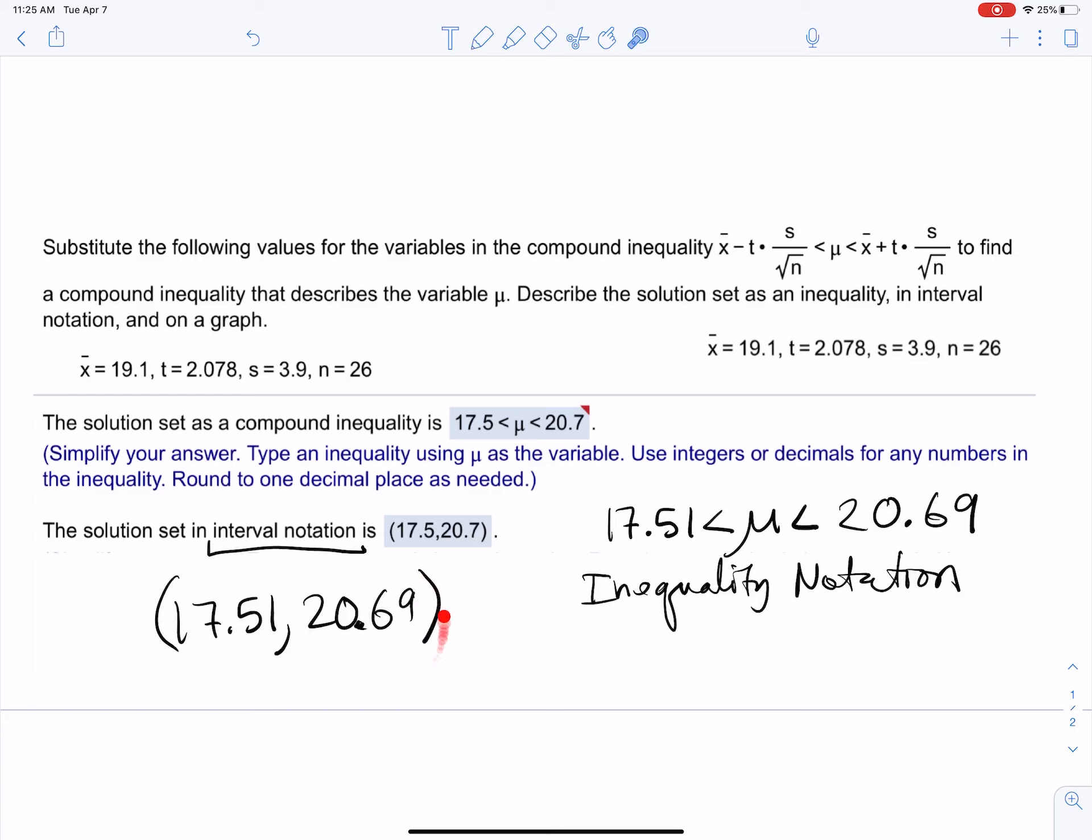Notice that we're using parentheses here, and the reason for that is because this inequality right here is a strict inequality—it's just less than. If it was less than or equal to, we would use a square bracket. But since it's less than, we just use parentheses.